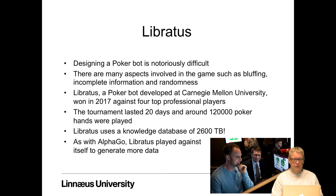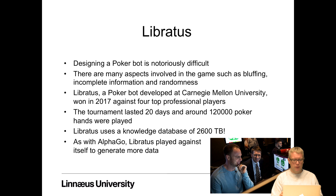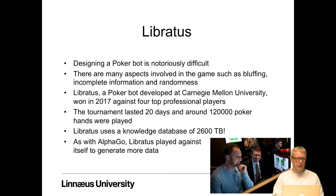Libratus is a poker bot developed at Carnegie Mellon University. Designing a poker bot is notoriously difficult due to bluffing, incomplete information, and randomness. In 2017, Libratus won against four top professional players in a tournament lasting 20 days with around 120,000 poker hands played. Libratus uses a knowledge database of 2,600 terabytes of poker games, and as with AlphaGo, it played against itself to generate more data since there simply wasn't enough data from human games. Some recent examples not mentioned here include Google Duplex, an assistant that can call to book a restaurant and other appointments.